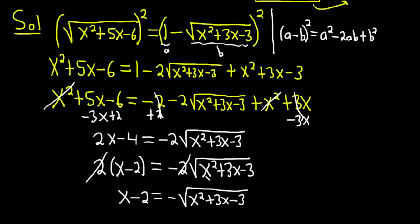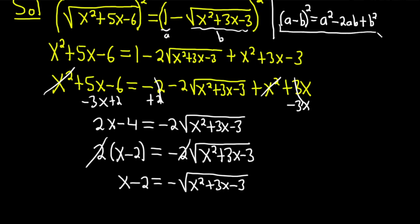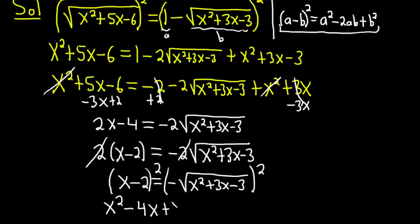Now we square both sides again, using the same (a minus b)² formula on the left. With x as the first term and 2 as the second: x squared, minus 4x, plus 4. On the right-hand side, the negative 1 squared just goes away, and squaring the square root removes it, leaving x squared plus 3x minus 3.